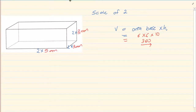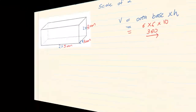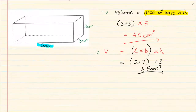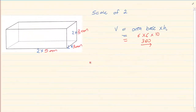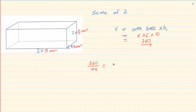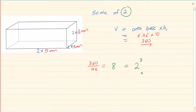Now if you take the first one that we had worked out, it was 45. If you take the new volume over the old volume, you will get 8. And look, the scale was 2 and 8 is 2 to the power of 3.